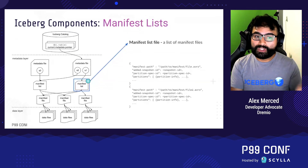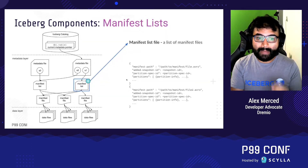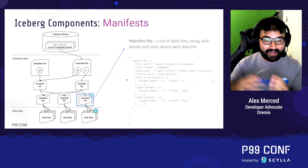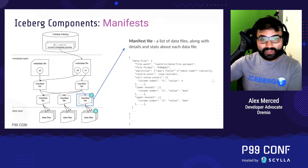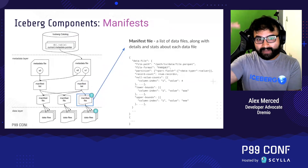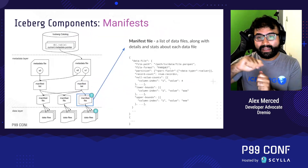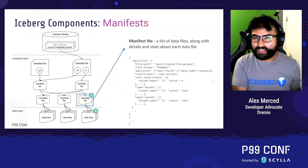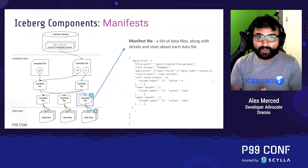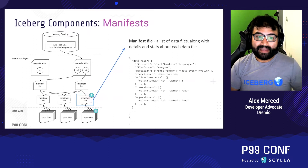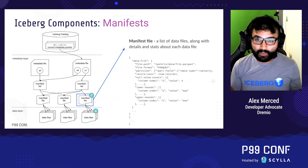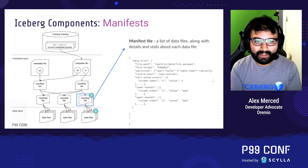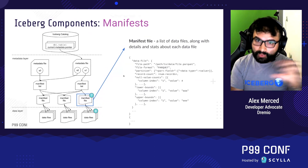That will point us to which groups of files we really want to scan — the individual manifests — which list the actual individual data files. The benefit is that we can avoid scanning every single file by using all this metadata at each layer: at the metadata file, at the manifest list, and at the manifest file. We can begin narrowing down which things we need to scan. You can always throw more processing power at a query, but that costs more money. The way to speed up a query and lower your cloud bill is by scanning fewer files.